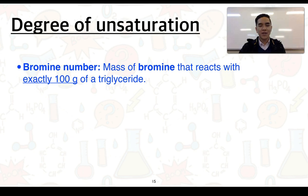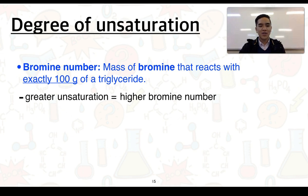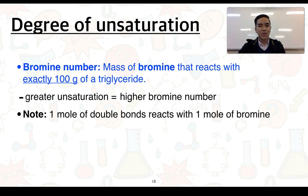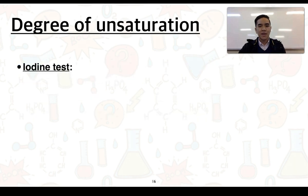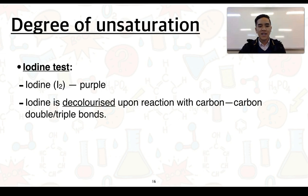To specifically look at the degree of unsaturation, we can talk about the bromine number — this is the mass of bromine that reacts with exactly 100 grams of a triglyceride. The greater the degree of unsaturation, the higher the bromine number. It's worthwhile noting that one mole of double bonds reacts with one mole of bromine. The other test we could use is an iodine test.